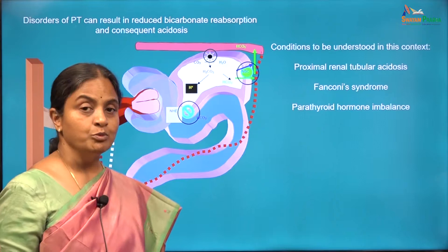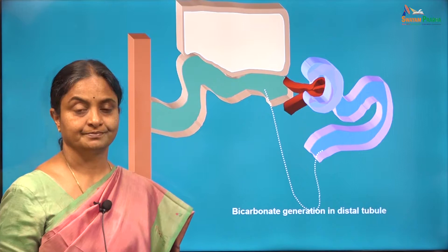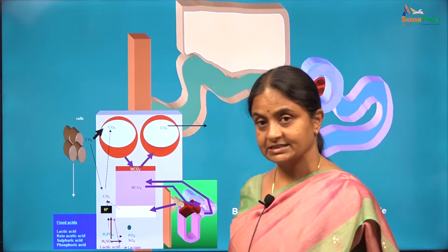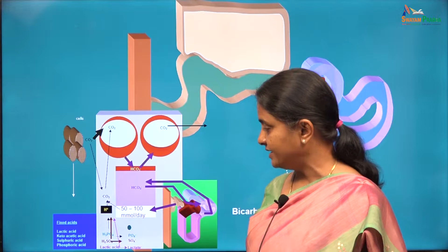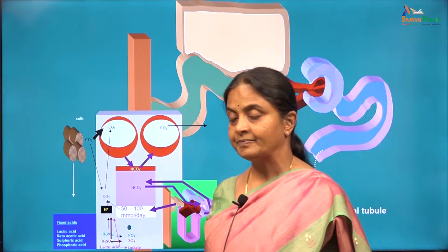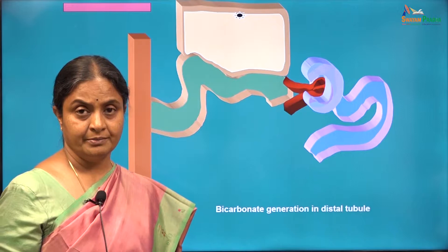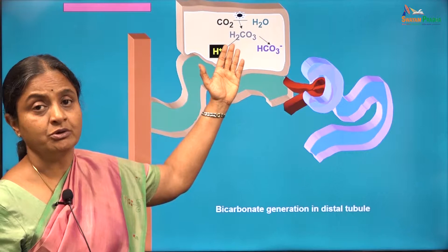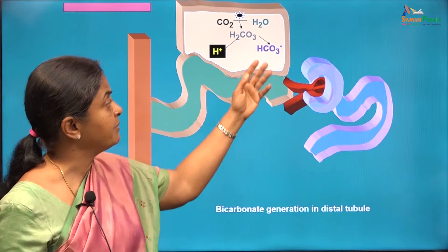We will now move on to bicarbonate generation in the distal tubule. The distal tubular cell generates bicarbonate to replace the bicarbonate consumed by the protons of the fixed acids. 50 to 100 millimoles of fixed acids are formed every day; that amount of bicarbonate is consumed by the protons every day and must be replaced by the distal tubular cell. The process of bicarbonate generation is the same as in the proximal tubular cell — the forward mode of the famous reaction goes on and the bicarbonate formed is given to plasma.